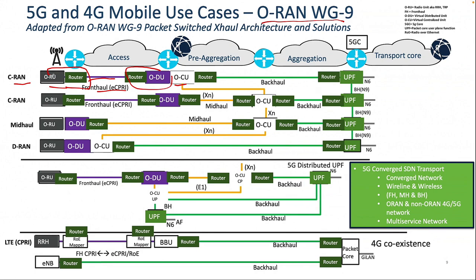Why do people want to go for CRAN? CAPEX and OPEX reduction — there is no baseband unit at the cell site. It's a lean site, and that helps with spectral efficiency and gains. In CRAN, you can also have a front-haul and mid-haul topology, meaning DU and CU can be put in different places. The reason is to keep the ODU centralized because there's a one-to-many relationship — one CU can manage many DUs, a form of centralization.